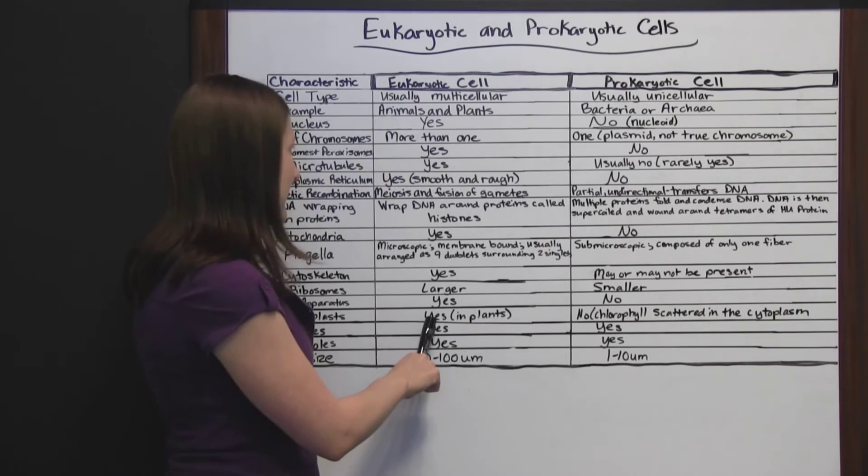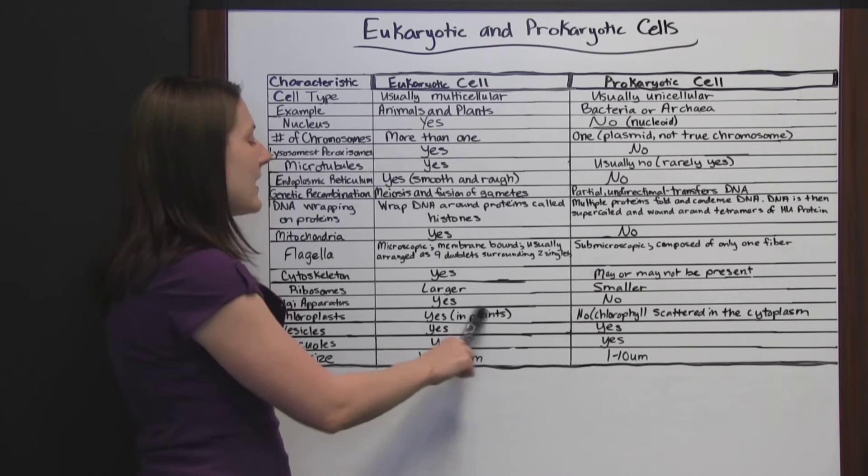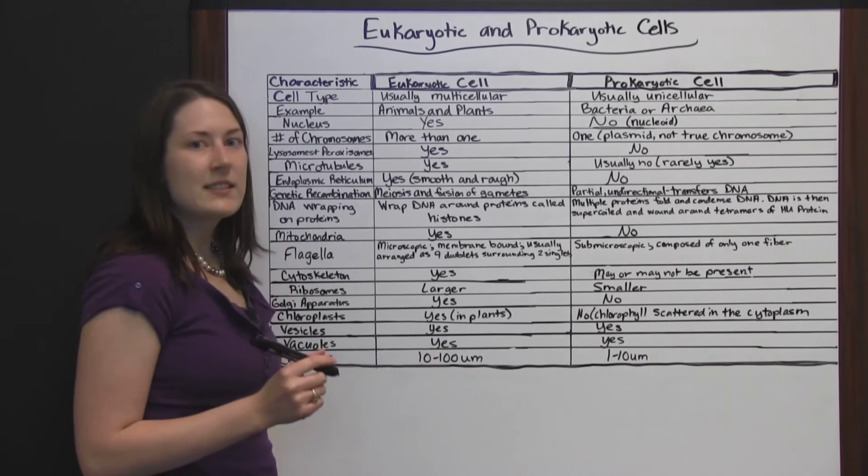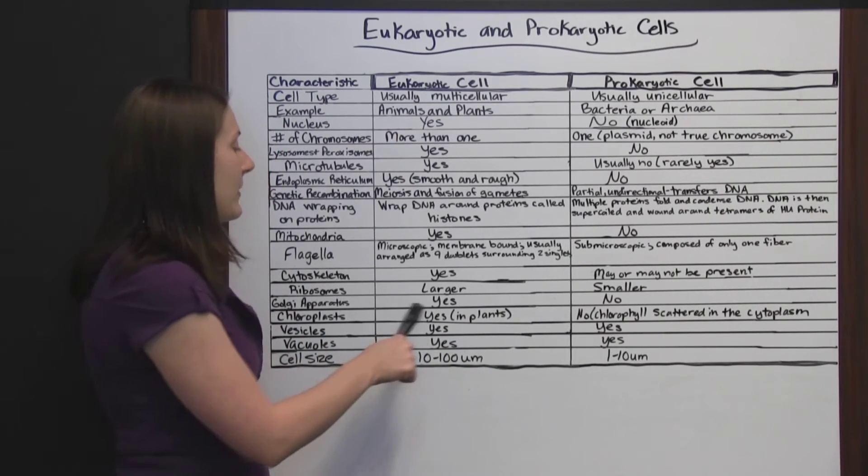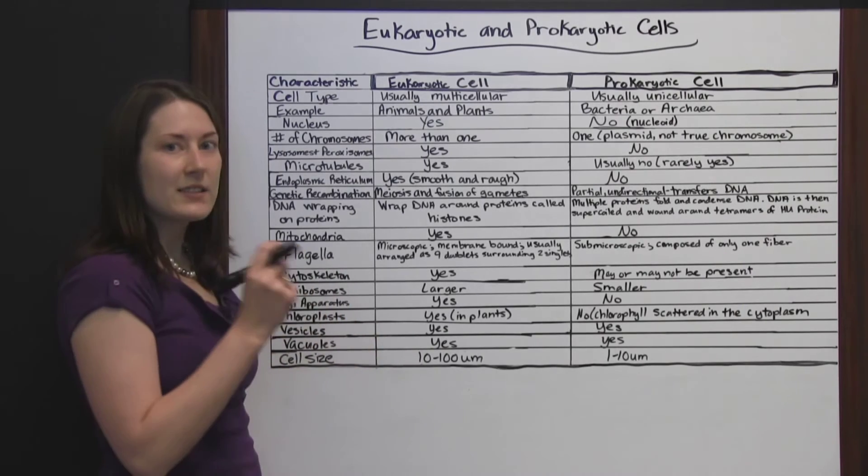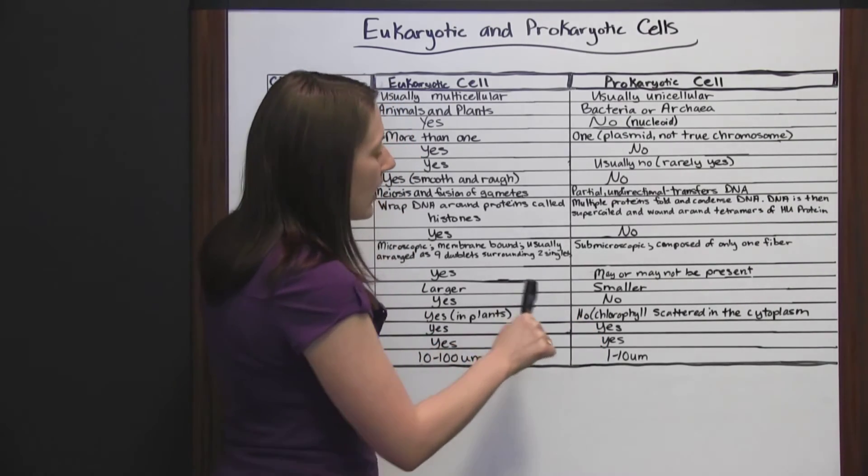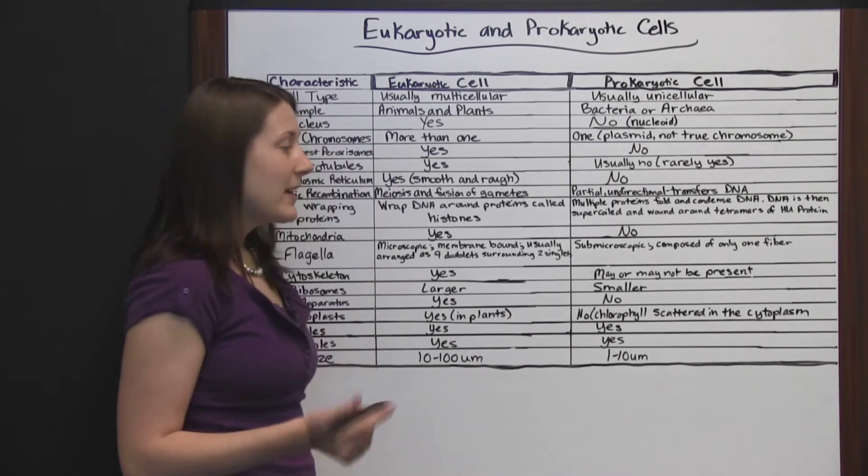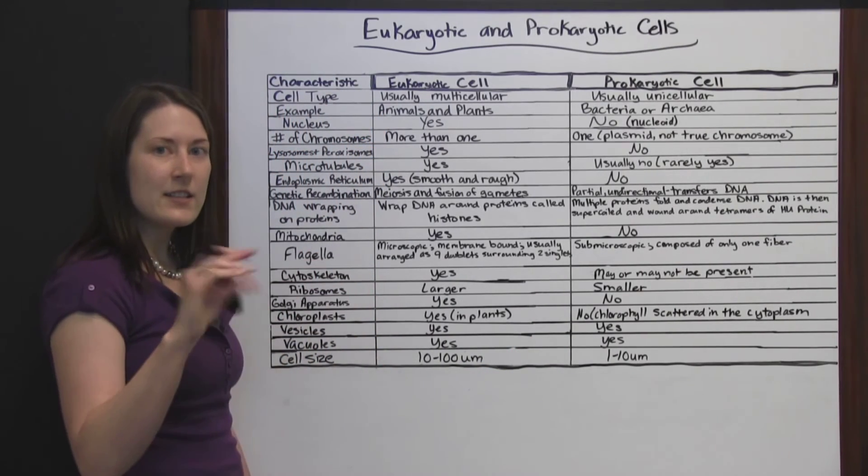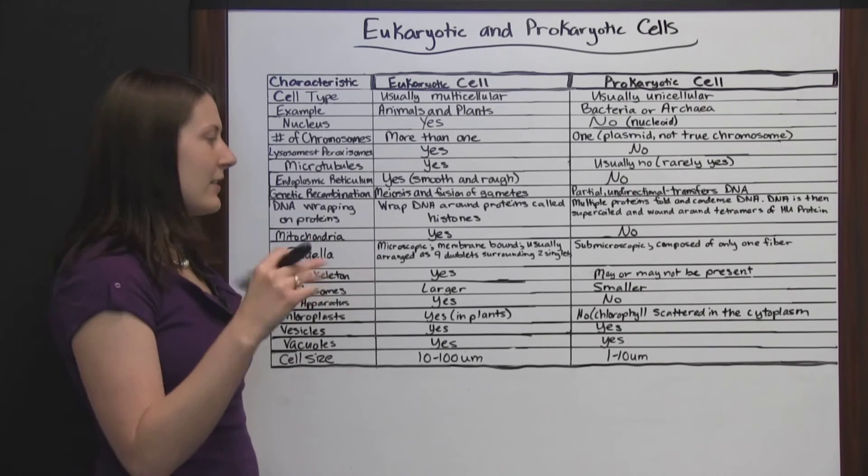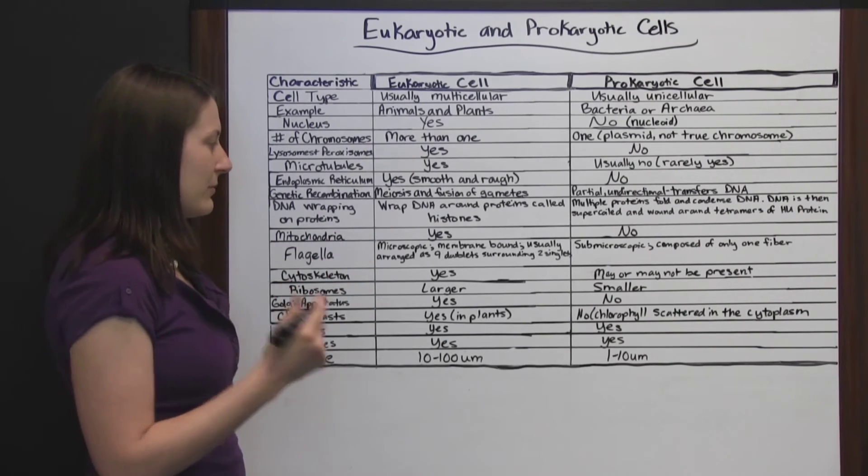Chloroplasts. Yes, they will be in eukaryotic cells if it's a plant. Chloroplasts are what holds the chlorophyll. In plants, you've got chloroplasts to hold the chlorophyll in. In prokaryotes, no, you do not have chloroplasts. The chlorophyll is just scattered in the cytoplasm, little dots here and there to help absorb the sunlight.